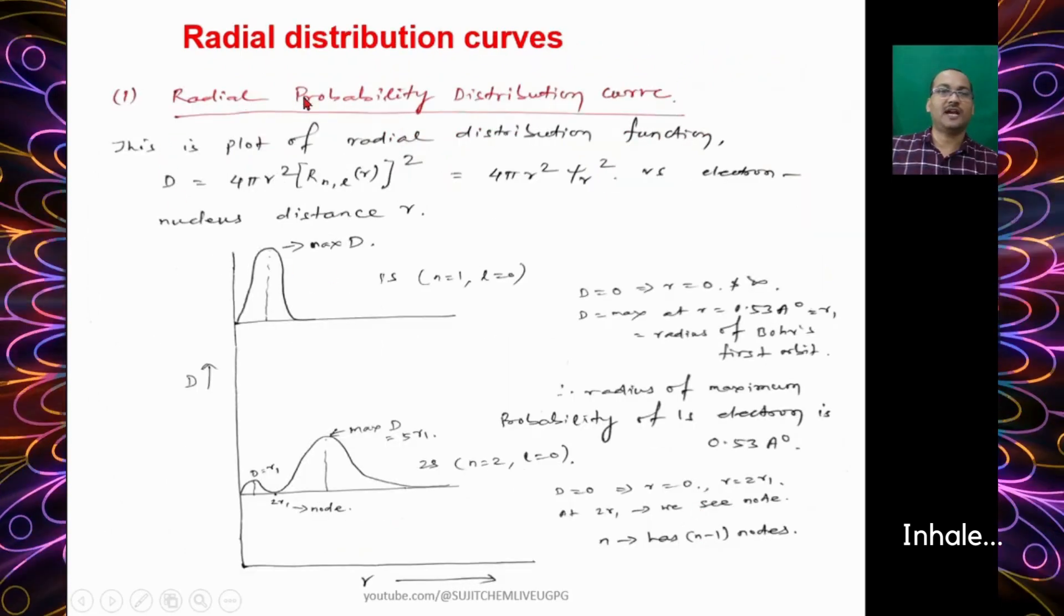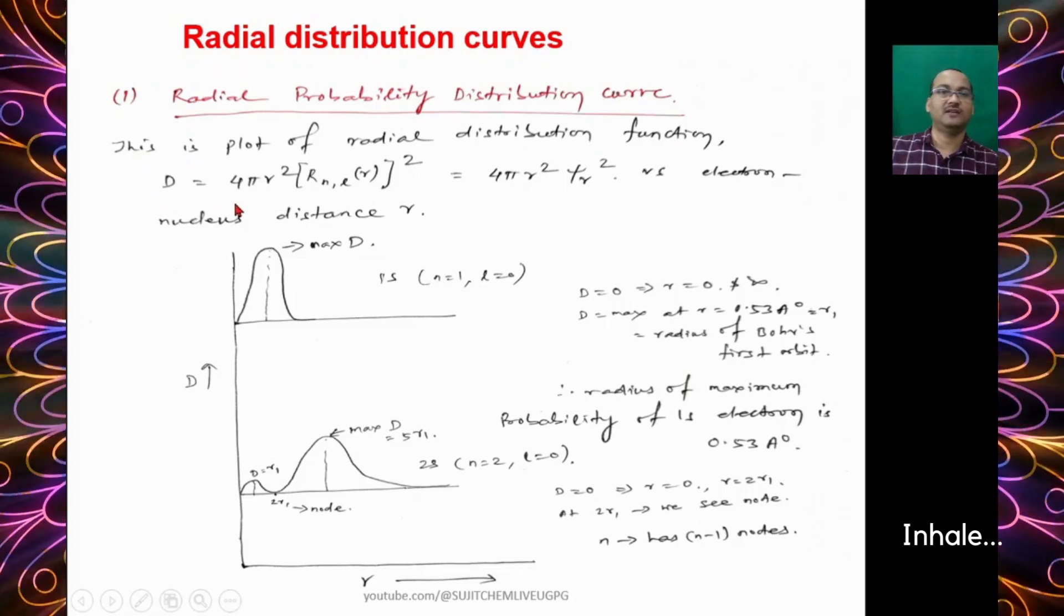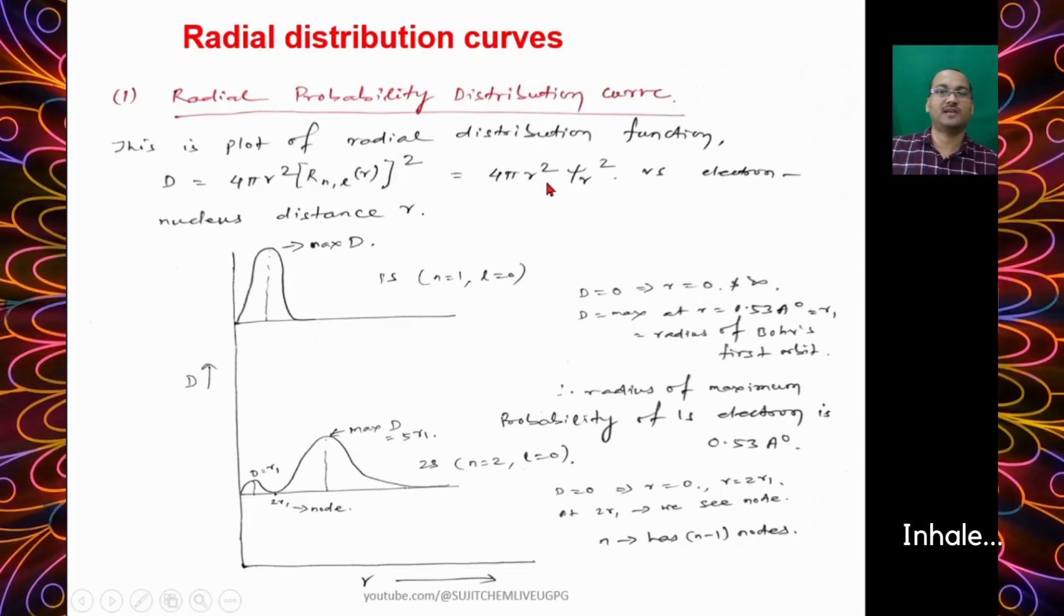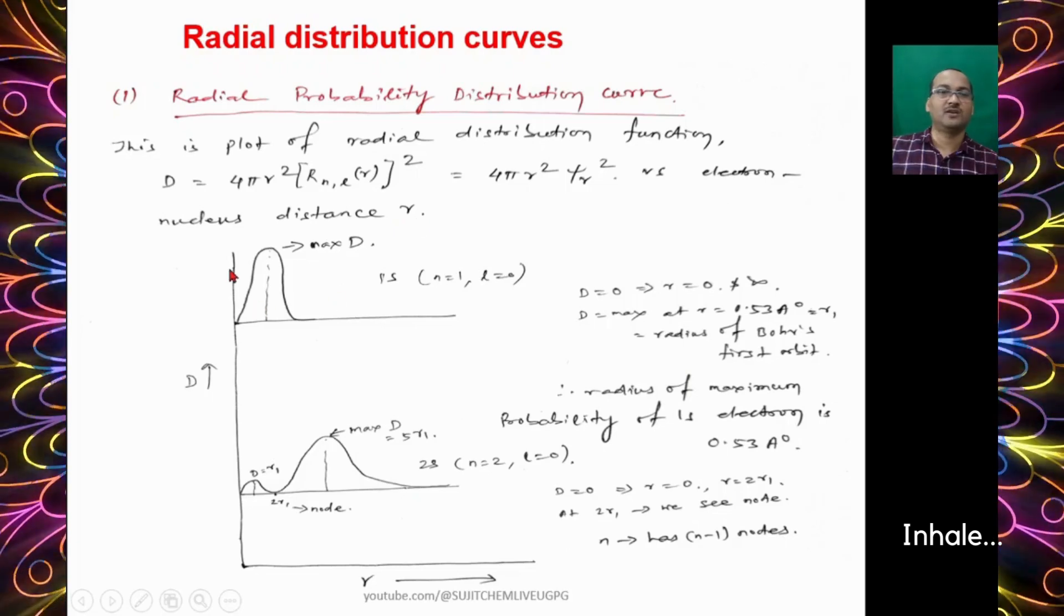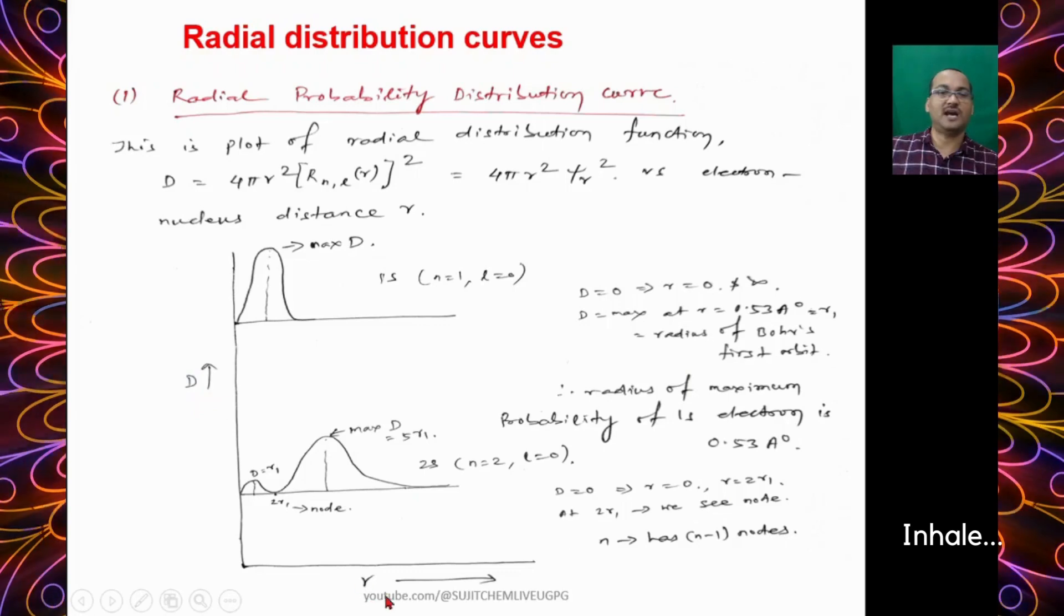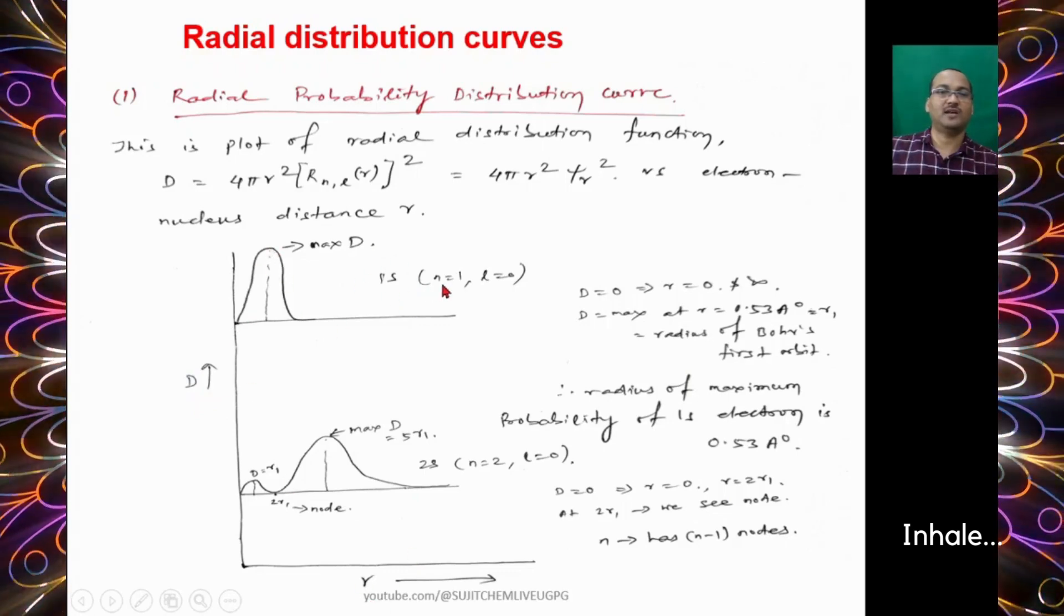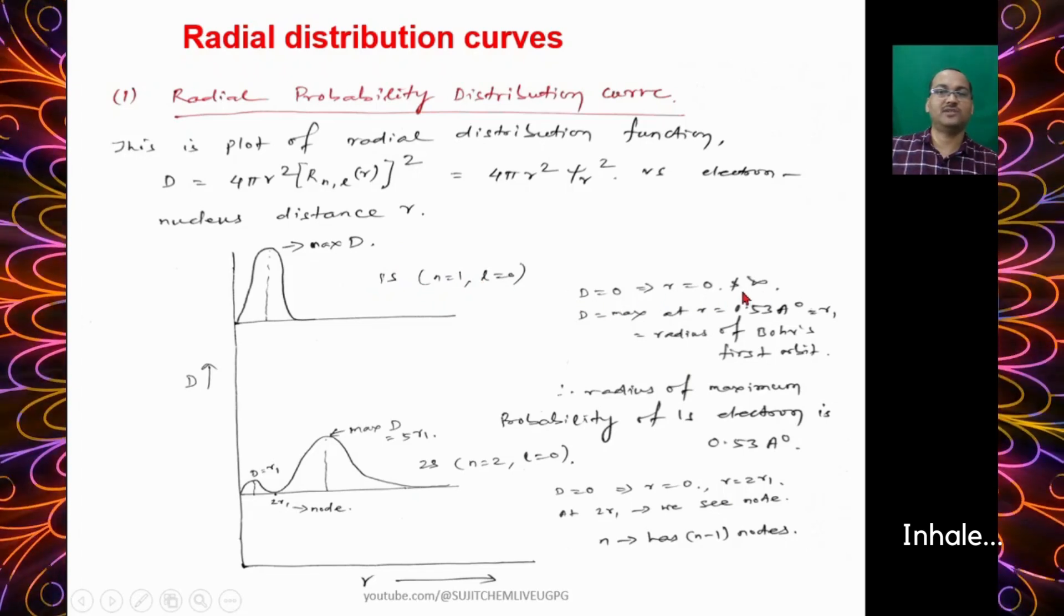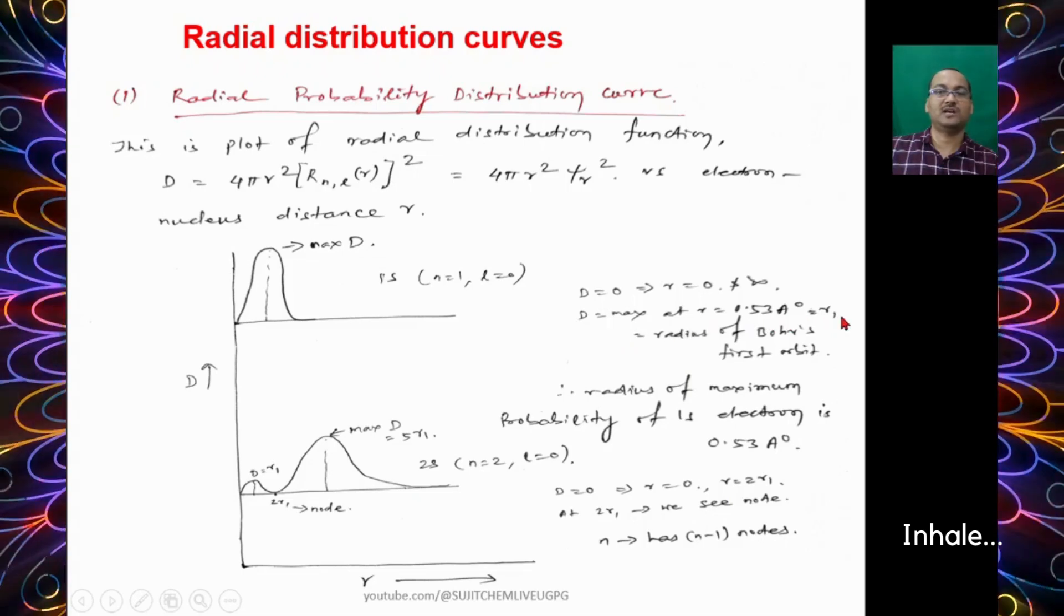Let's talk about Radial Probability Distribution Curve. This is the plot of Radial Distribution Function d = 4πr²|Rnl(r)|² = 4πr²ψ² versus electron nucleus distance r. If you plot the graph between the radial distribution function d versus r, you will get a curve like this for 1s orbital where n = 1 and l = 0. This d value equals 0 when r = 0 and infinity, and d will be maximum at r = 0.53 angstrom, which equals r₁.